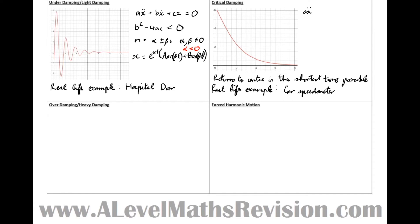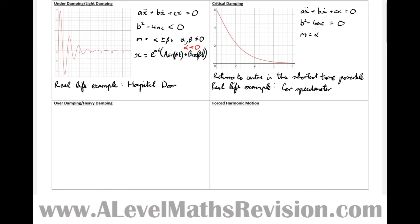Looking at it mathematically, we've got the general differential equation: ax double dot plus bx dot plus cx equals zero. These sorts of solutions happen when b squared minus 4ac equals zero, i.e. there are repeated roots. When there are repeated roots, the auxiliary equation has root m equals alpha alone, where alpha is real but must be less than zero for exponential decay to occur. The general solution takes the form x equals (a + bt) e to the power of alpha t.